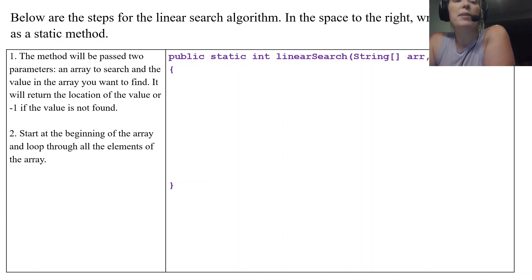The next step is to start at the beginning of the array and loop through all the elements of the array. Hopefully that sounds familiar because that's traversing through an array, starting at index zero and going all the way to the end, which we did extensively in the last lesson. So here's our familiar loop header looking through the entire array.